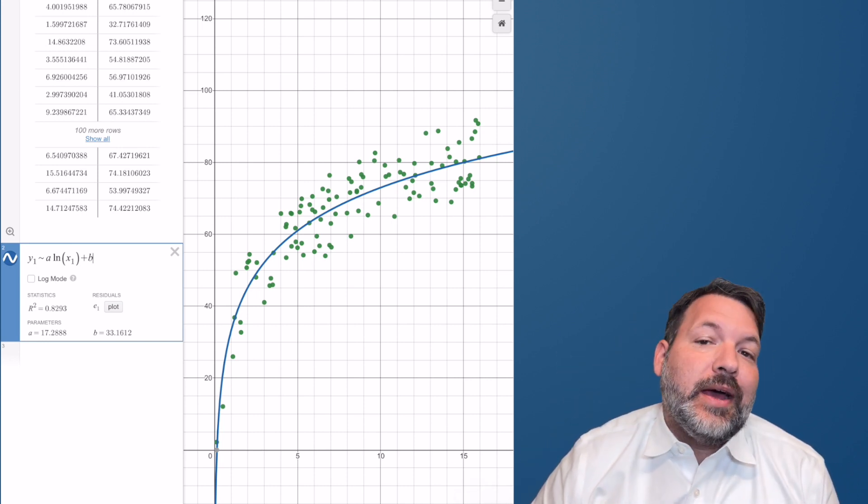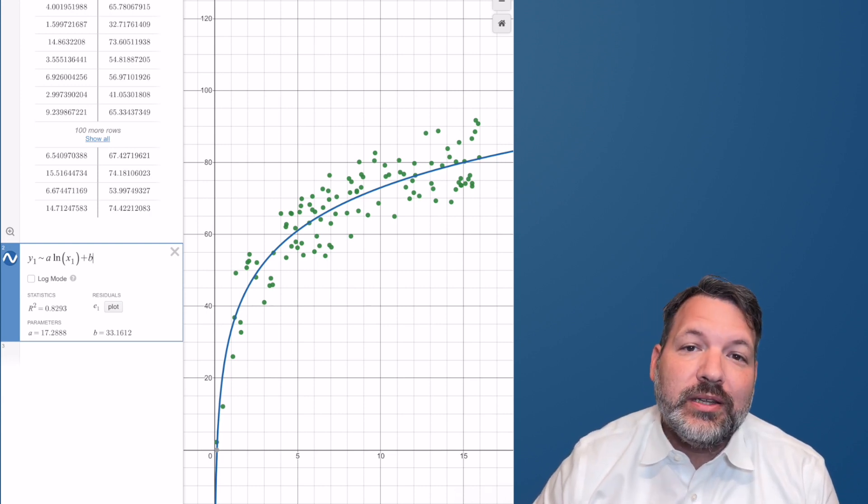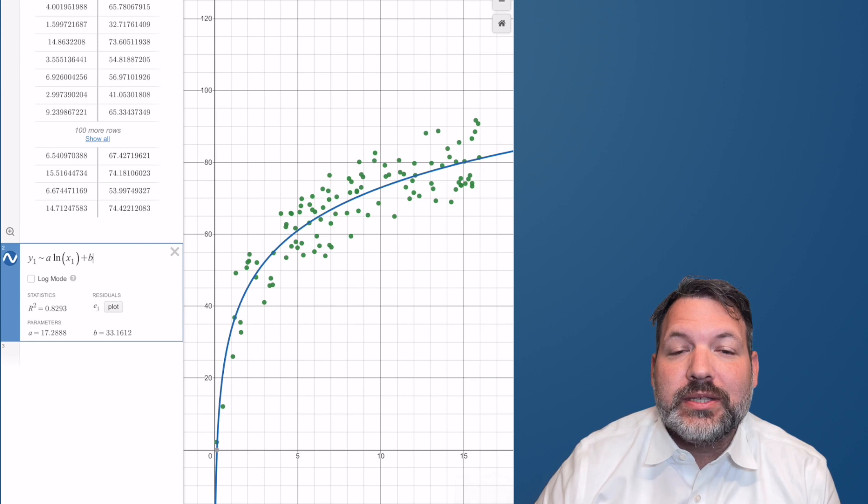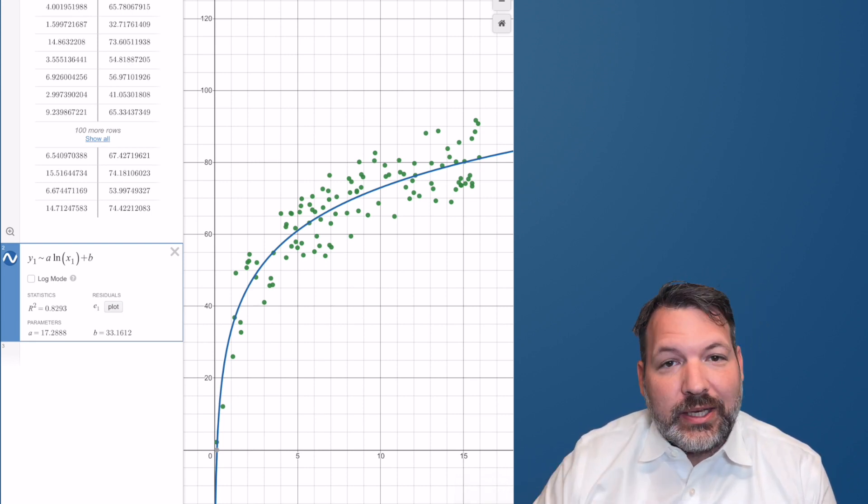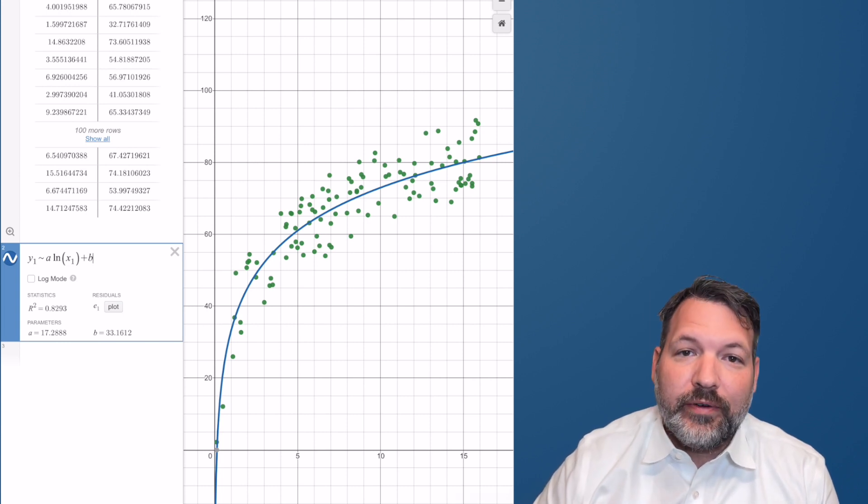A nine-year-old dog, on the other hand, the natural logarithm of nine is just a little bit bigger than two. Two times 17 is 34. 34 plus 33 is 67. So your nine-year-old dog is like a 67-year-old man or woman, retired, ready to enjoy their finer days.